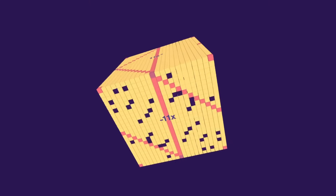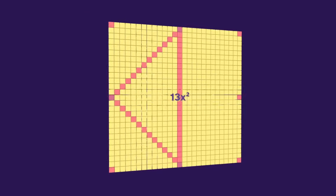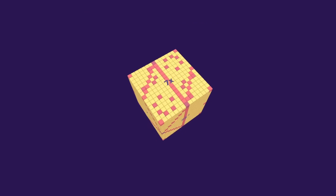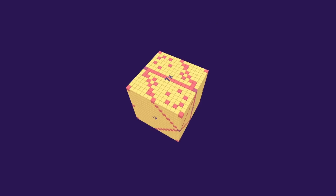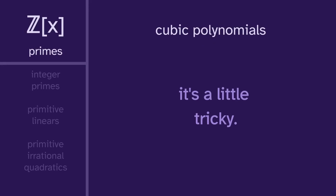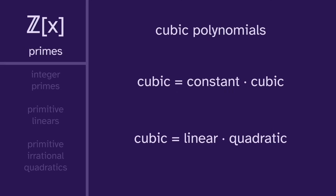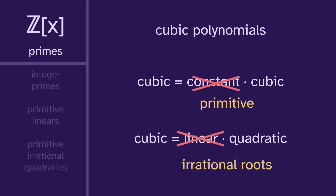And it's not just 11 — this happens when the max is another prime, like 13 or 7. This kind of wraps up our study of the integer polynomials. We could continue with the cubics, but it's a little tricky. A cubic can be factored as a constant times a cubic, or as a linear times a quadratic. We can rule out a constant factor if the polynomial is primitive, and we can rule out a linear factor if it only has irrational roots. And that's actually enough to guarantee a prime — it's just like the quadratics. So we have primitive irrational quadratics and cubics.